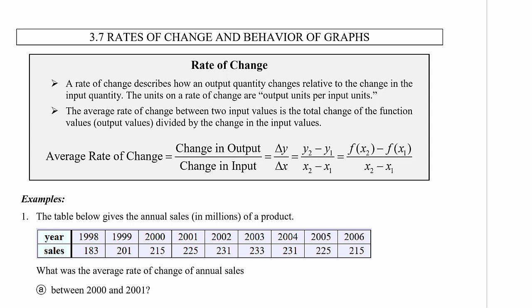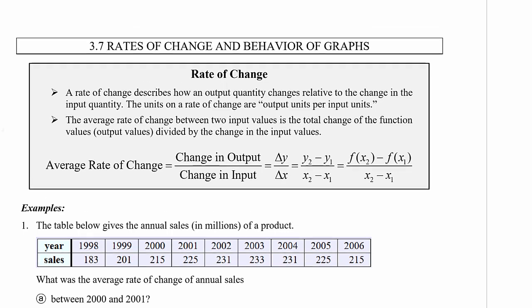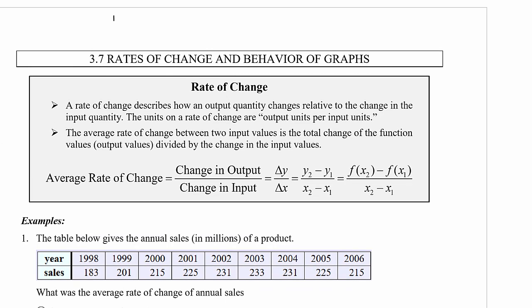So in this video we're going to talk about rates of change and computing an average rate of change. We've been doing some work with rate of change when we were looking at the slope of a line, because the slope of a line describes how the output quantity is changing with respect to the input quantity. As you recall, the slope of a line M is given by the change in Y over the change in X, or Y2 minus Y1 over X2 minus X1.